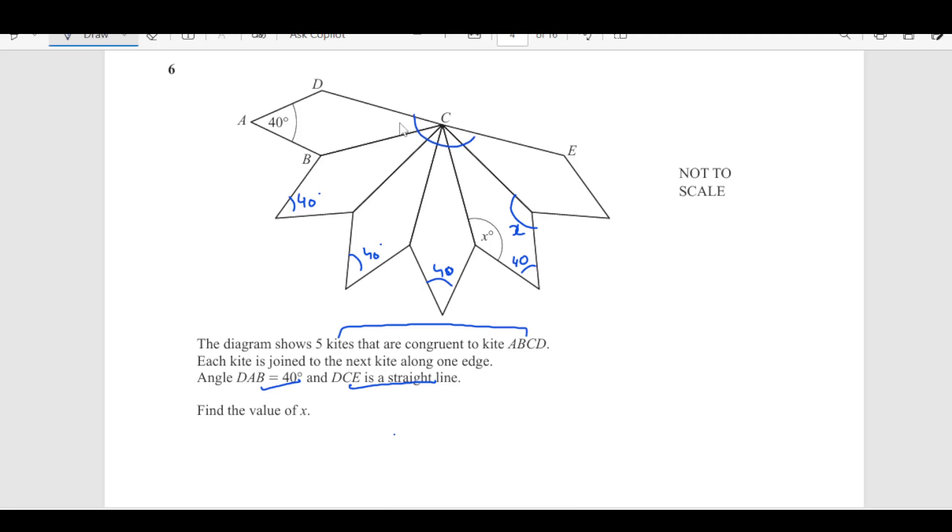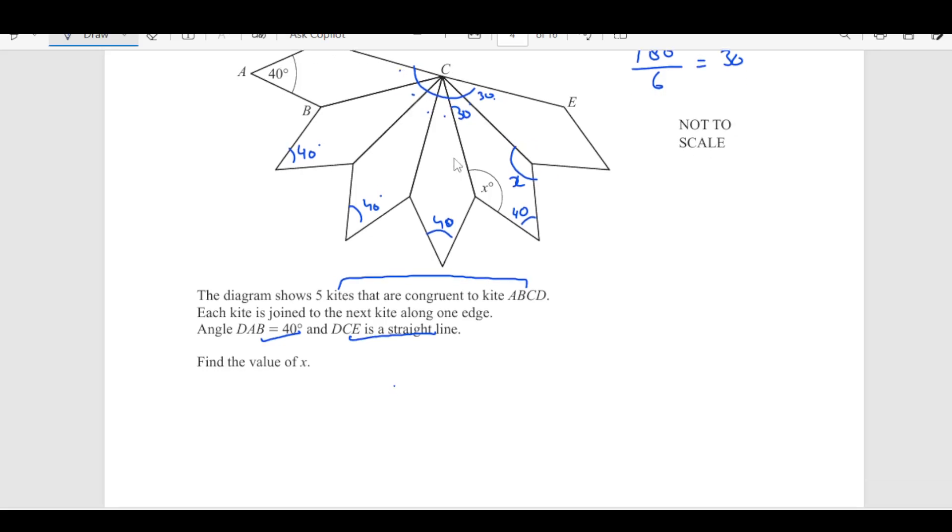You see DCE is a straight line. We are given this is a straight line. So, sum of all these angles should be 180. So, how many are they? They are 1, 2, 3, 4, 5 and 6. So, 180 is divided into 6 parts. So, each angle is 30 degrees. So, this is 30. So, that means this angle is 30.